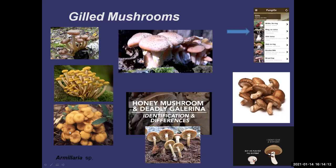Honey mushrooms also have these little hairs on the cap, and when you look at them from above, they're darker in the middle and less dark around the outside. Galerina is a more uniform brown on the cap and has a fine ring or ring remnant that's brown, with browner gills. Honey mushrooms will be more whitish-gilled. Honey mushrooms are also related to shiitake mushrooms that you can buy in the grocery store.